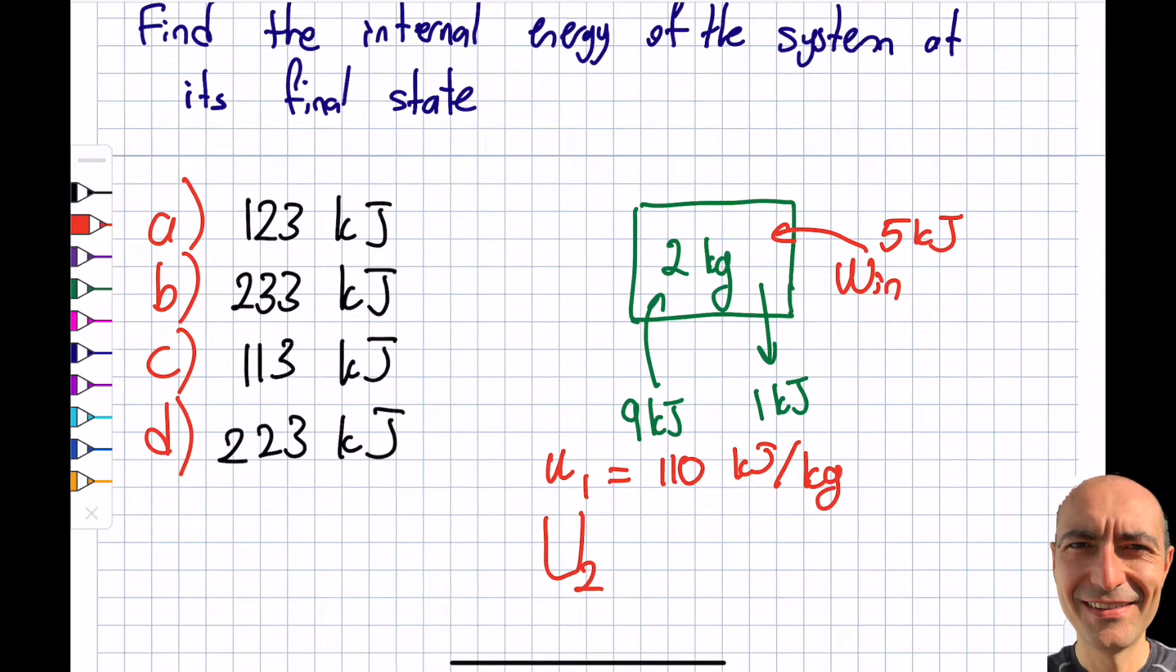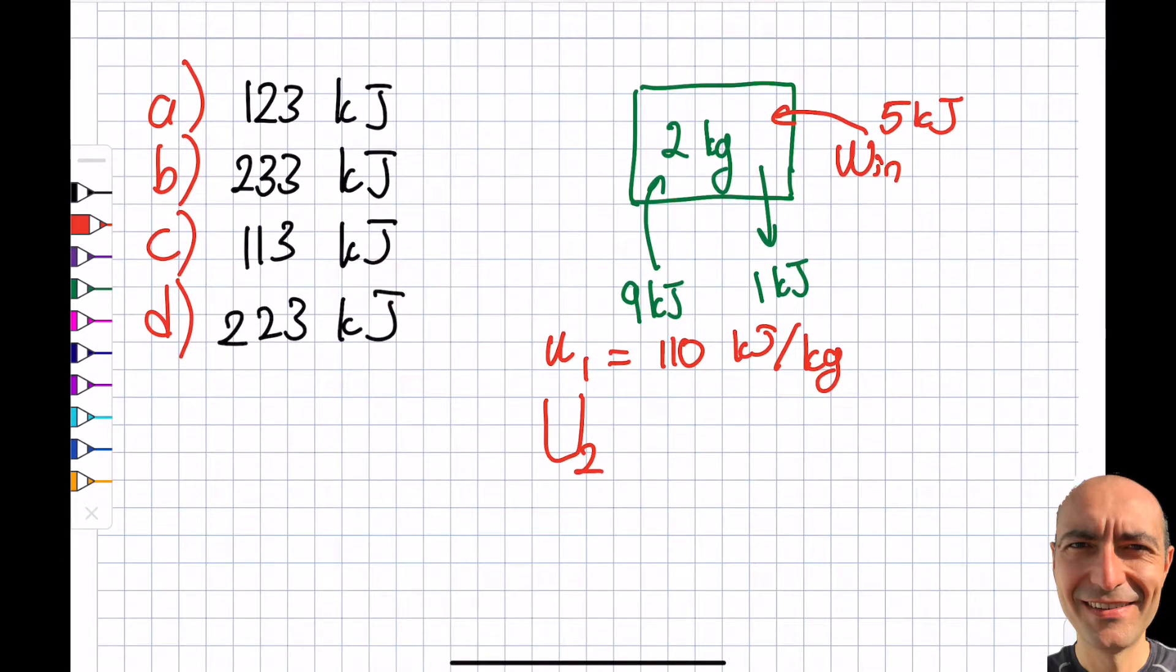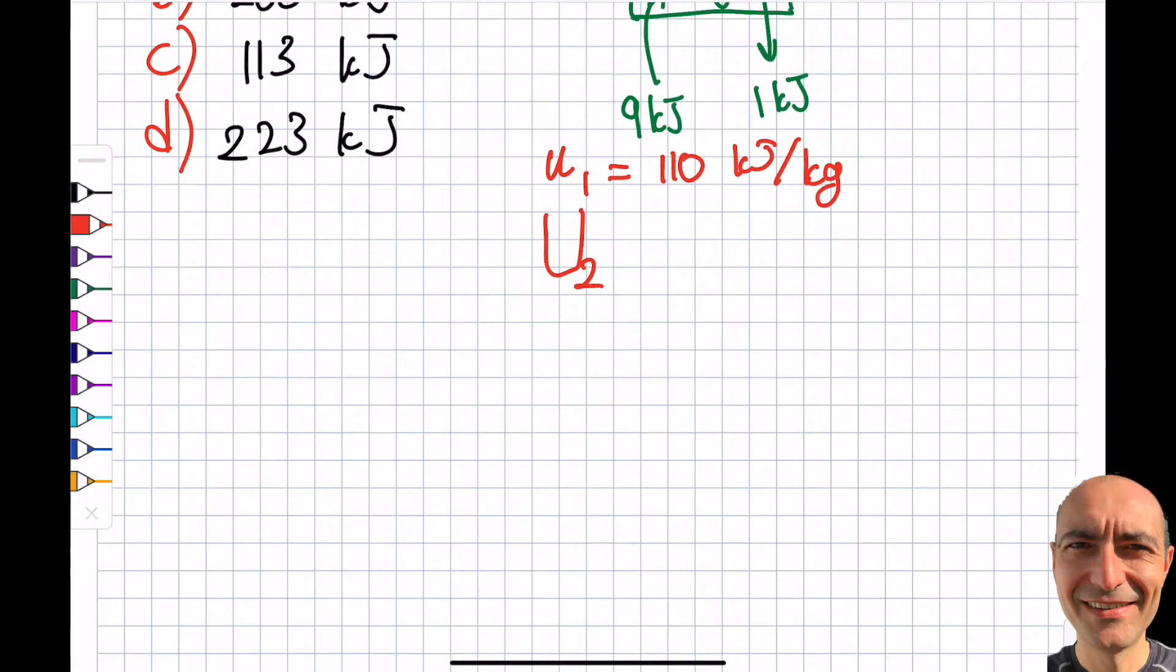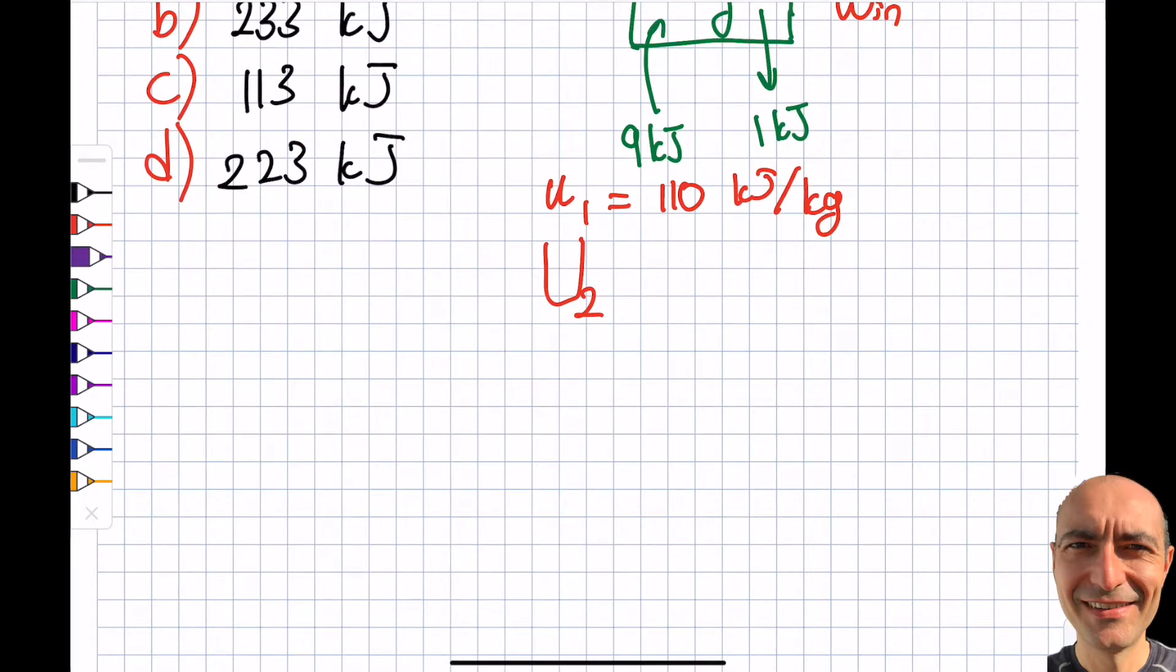You can see what's happening here—having a diagram makes life so much easier. What I will do is write the first law. It's going to look like this: E in minus E out will be equal to the energy change of the system that I have.